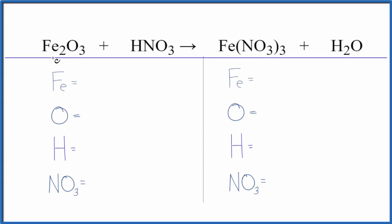In this equation, we have Fe2O3 plus HNO3. This is iron 3 oxide, and this is nitric acid, a strong acid. To balance this equation, we'll first count the atoms up, and we're going to use a bit of a trick to make this a lot easier.